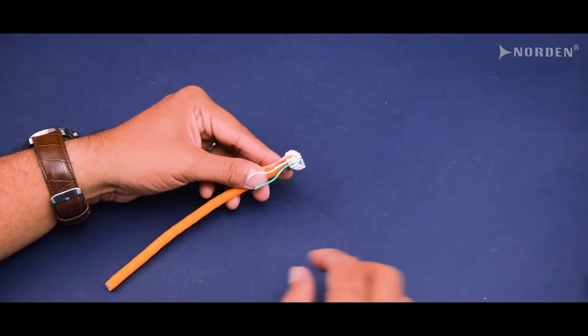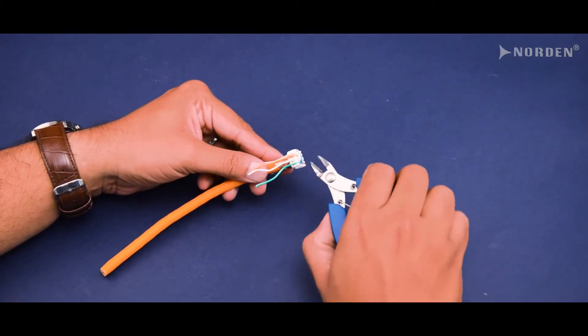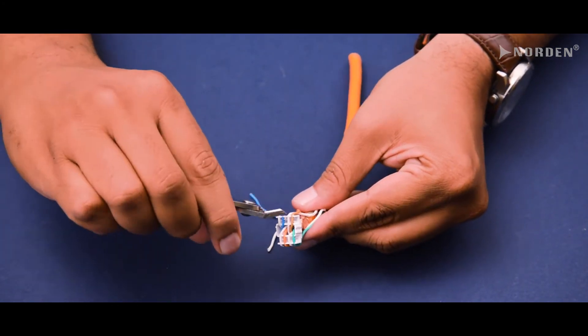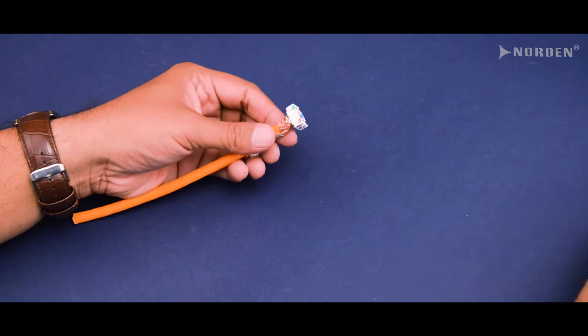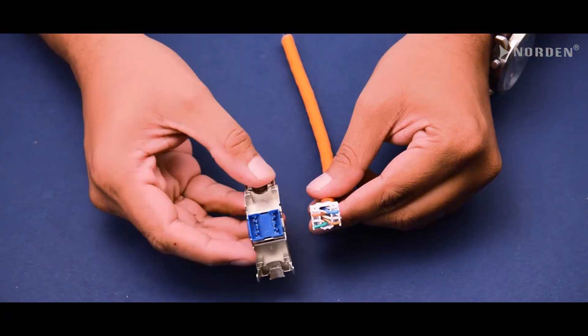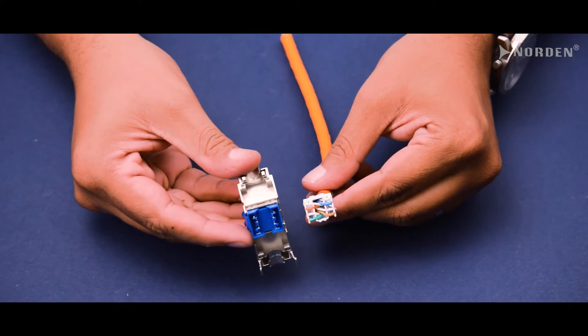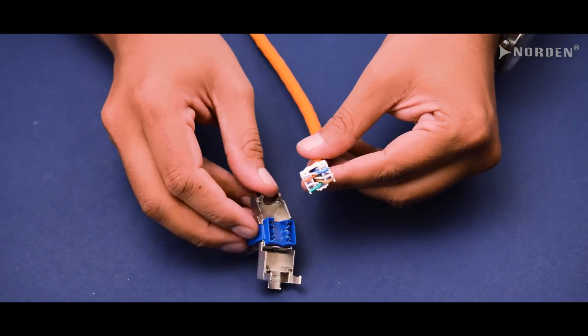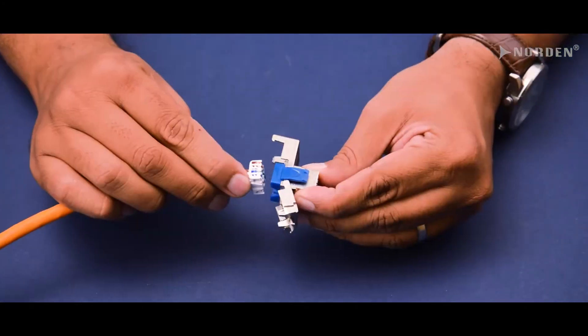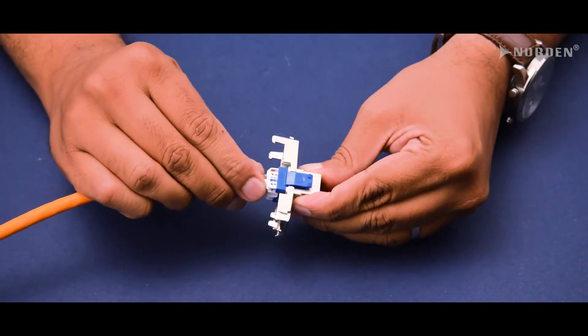Then cut the excess wires which are outside of the feature slot as close as possible to the edge. Then insert the termination cap inside the Norden Category 8 shielded toolless keystone jack. Please ensure that the arrowhead in the termination cap marries up and aligns with the arrowhead on the keystone jack.